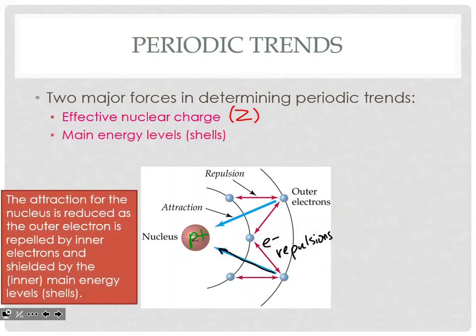The other reason has to do with the number of main energy levels present. As we go down the groups, you're going to be adding main energy levels. Main energy levels are like the shells around the nucleus — like the circles we draw around the nucleus in the Bohr model. Technically, we know they are three-dimensional spaces with S, P, and D sublevels inside them. The attraction for the nucleus is reduced as the outer electrons are repelled by the inner ones and shielded by the inner main energy levels or shells.